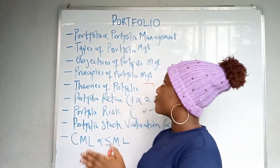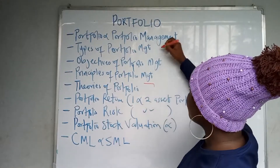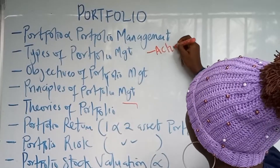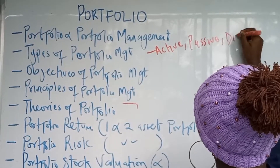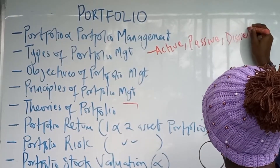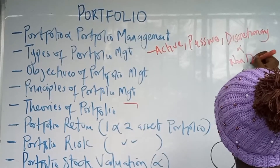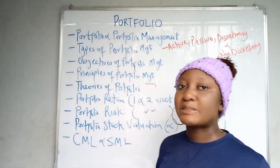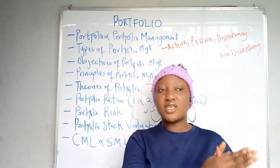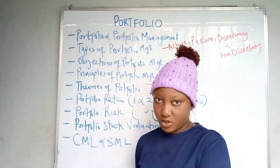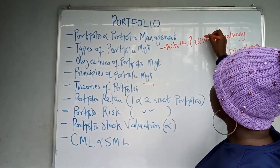The concept of portfolio management is to maximize return and minimize risk. The types of portfolio management include active portfolio management, passive portfolio management, discretionary portfolio management, and non-discretionary portfolio management. These types explain portfolio management with regard to the portfolio manager or the investor.